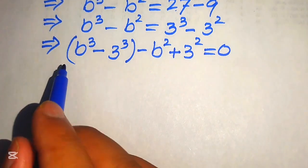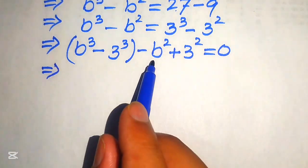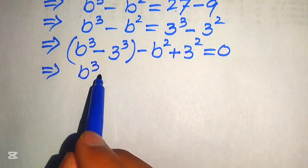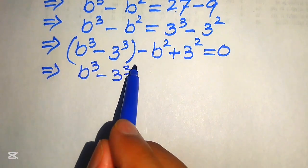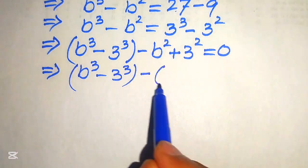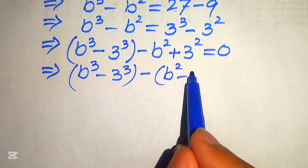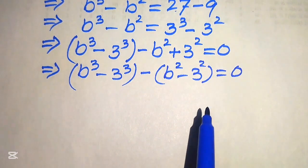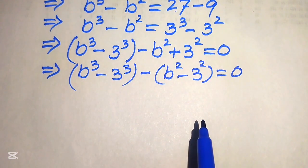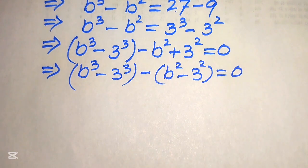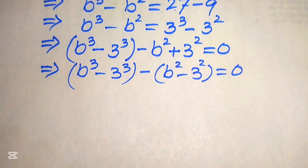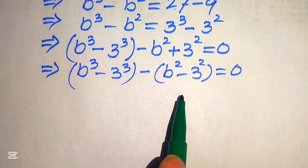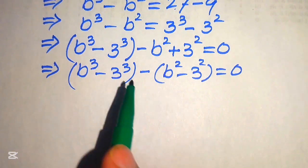We take out a common negative sign from the square terms, rewriting the equation as: b cubed minus 3 cubed, minus the quantity b squared minus 3 squared, equals 0. We will apply the difference-of-cubes formula to the first factor and the difference-of-squares formula to the second factor.